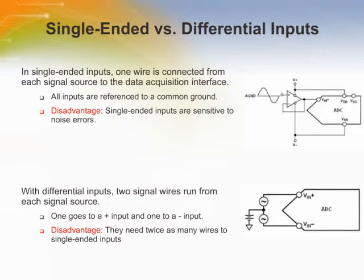The noise problems can be solved by differential inputs. In differential inputs, one wire carries the signal while the second wire carries the inverse of the signal. There are many applications that require a single-ended analog signal, either bipolar or unipolar, to be converted to a high-resolution differential analog-to-digital converter. With differential inputs, two signal wires run from each signal source.